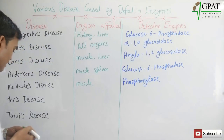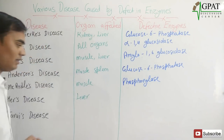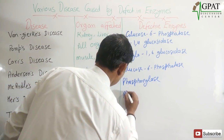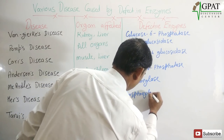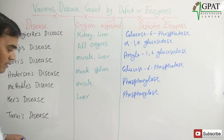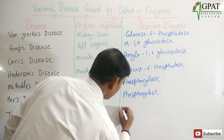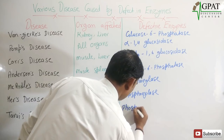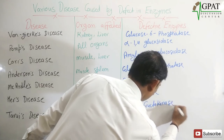Next, Hers disease mainly affects the liver, and the enzyme responsible is phosphorylase. Next, Tarui disease mainly affects muscles, and the enzyme responsible is phosphofructokinase.